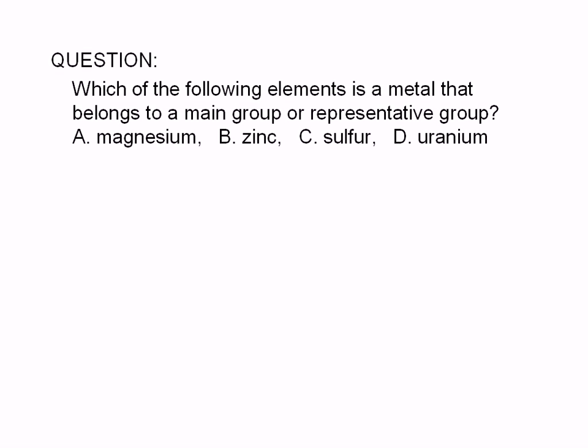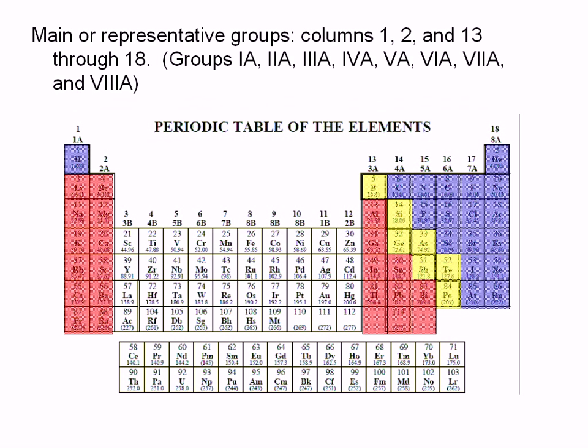To answer this question, let's refer to a periodic table. The main or representative groups are highlighted in the periodic table shown here. These are columns 1, 2, and 13 through 18.